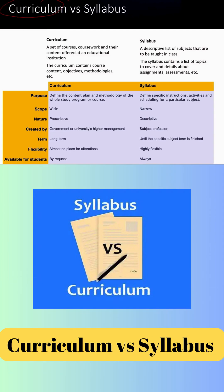Differences between curriculum and syllabus. Curriculum is a set of courses or coursework and their content offered at an educational institution, whereas the syllabus is a descriptive list of subjects that are to be taught in the class. The curriculum contains course content, objectives and methodologies, whereas the syllabus contains just the list of topics to cover and details about their assignments and assessments.